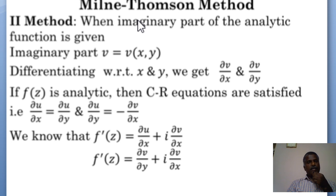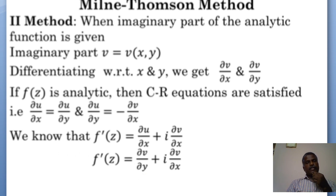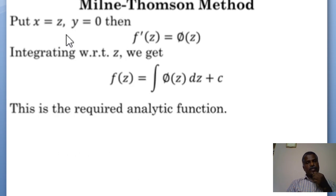Because f(z) is analytic, the CR equations are satisfied: ∂u/∂x = ∂v/∂y and ∂u/∂y = −∂v/∂x. Also, because f(z) is analytic, the derivative f'(z) exists, equal to ∂u/∂x + i·∂v/∂x. In this case, we replace ∂u/∂x using the CR equations: ∂u/∂x = ∂v/∂y. Again, by the Milne-Thompson method, we put x = z and y = 0 in f'(z).